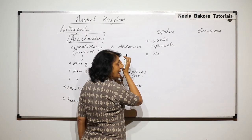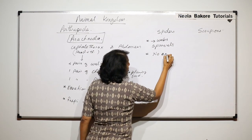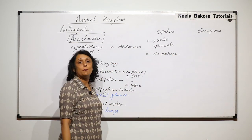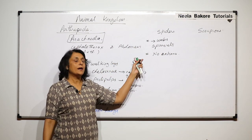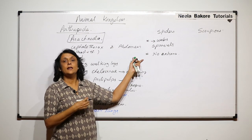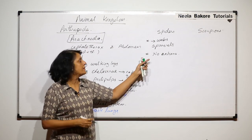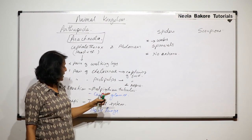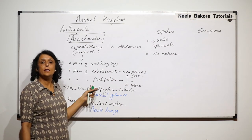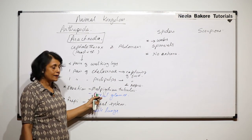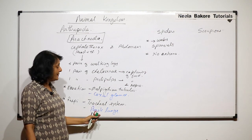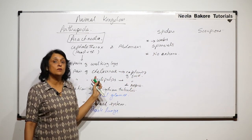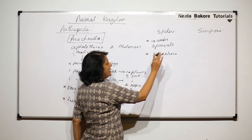Spiders do not have antennae — no antennae in case of spiders. They use four pairs of walking legs. For excretion, they have Malpighian tubules and coxal glands. Book lungs are exclusively found in scorpions, not in spiders.